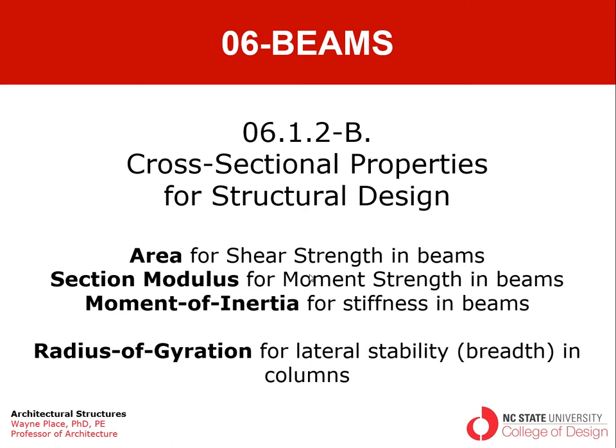We'll also talk about a quantity called the radius of gyration, which we mentioned in the chapter on columns and compression elements. It is an indicator of the breadth of a compression element in resisting elastic instability or lateral movement of the column under axial force. Radius of gyration is very closely related to the moment of inertia, or they are derivatives of each other in a mathematical sense.